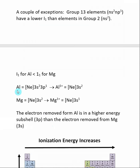The electron configuration for aluminum is neon 3S2 3P1, and the electron configuration of magnesium is neon 3S2. When aluminum loses an electron, it comes from the 3P subshell. However, when magnesium loses an electron, it comes from a 3S subshell.